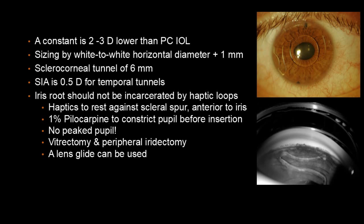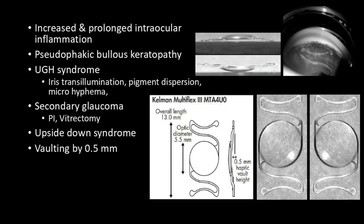Most of the problems we see are because of implanting the lens concave anterior — the lens has to be implanted convex anterior. If you look at the profile of the lens as you can see here, there is a vaulting anteriorly of the optics. The haptic has to be behind so that it matches with the configuration of the anterior chamber.